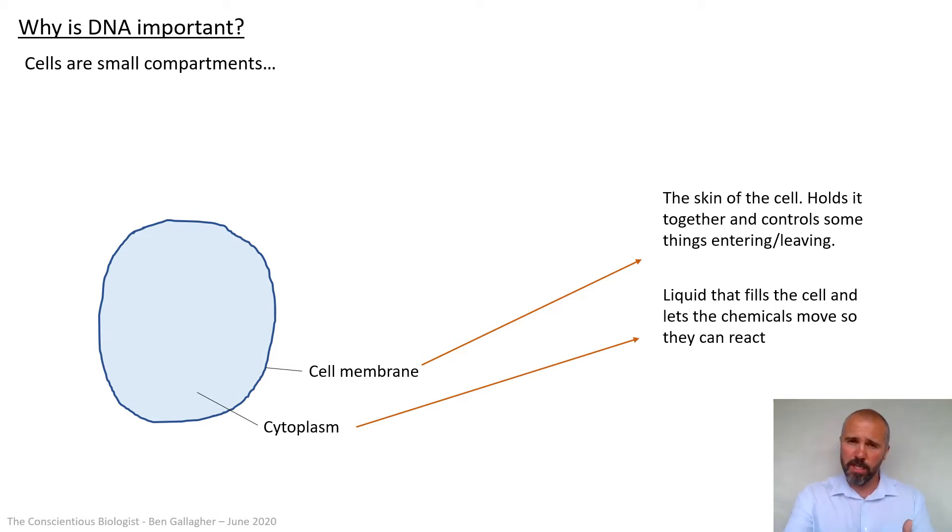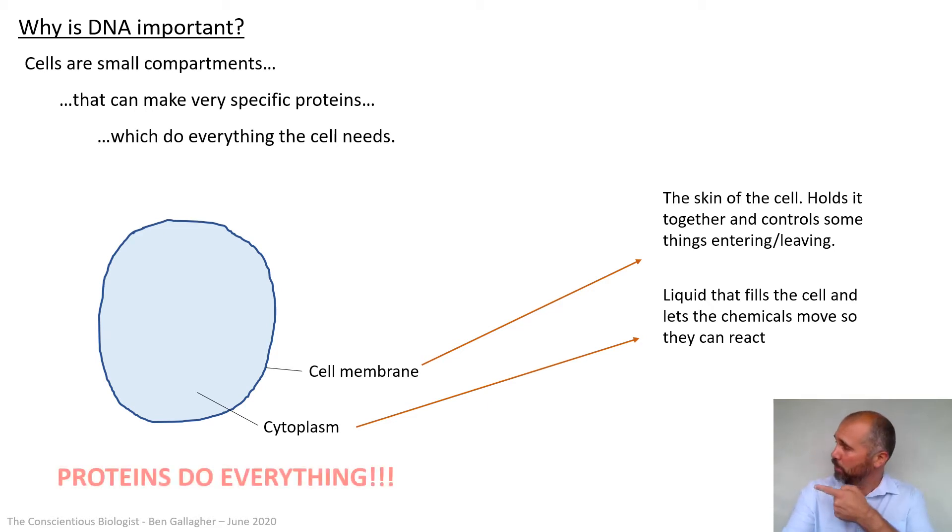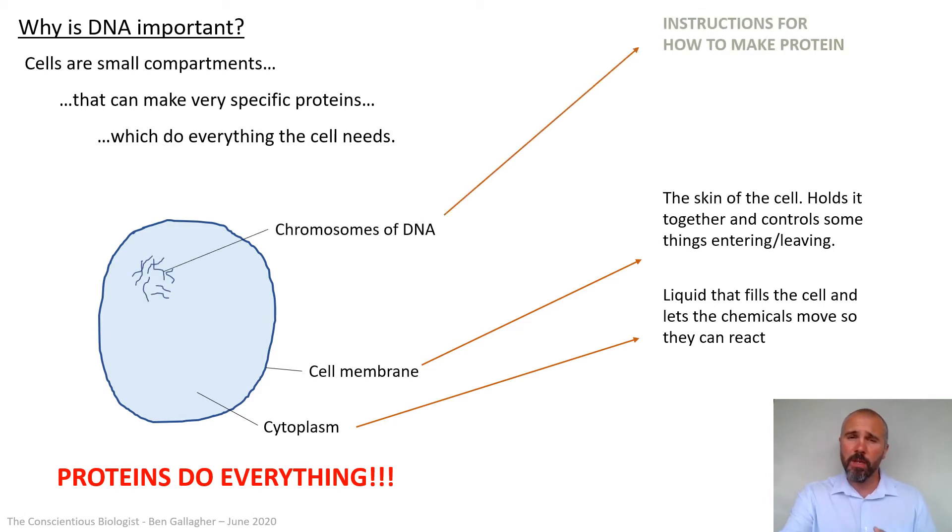Now, where DNA is so vital is that for a cell to be properly functional, for it to be alive and have a metabolism, that compartment needs to be able to make some very specific proteins. Because those proteins will do everything the cells need. And so importantly, proteins do everything. That exact red flashing icon has come up in so many of my videos. Proteins are the driving force really behind life. It's the proteins that do the metabolic reactions that form the structures that make things within cells. Proteins are so important. Why does that relate to DNA?